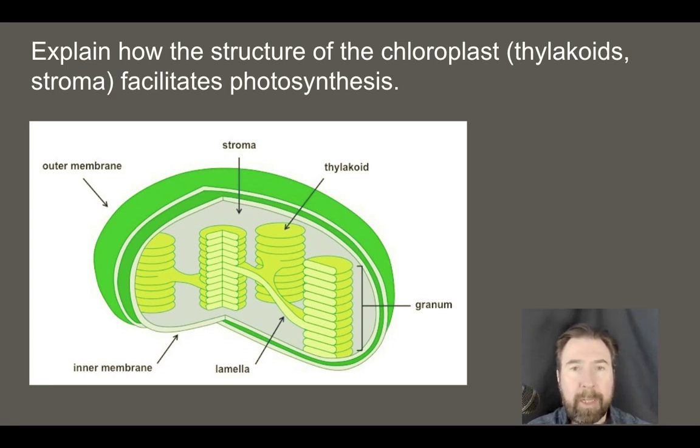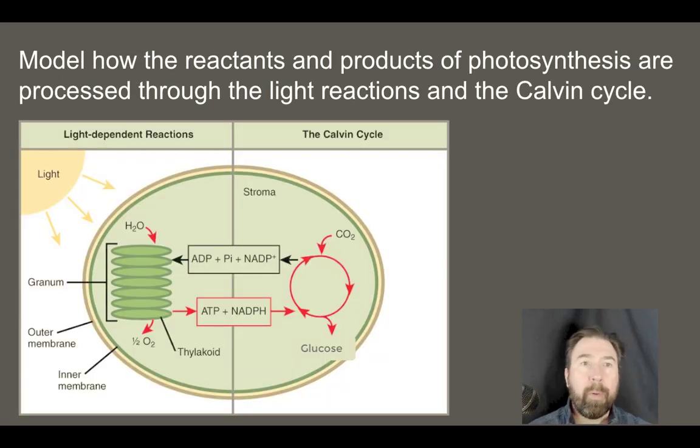These are the two regions where you're going to have the two types of reactions that take place for photosynthesis. Specifically within the thylakoids we're going to see those light dependent reactions, the ones that are going to take sunlight and initiate the reaction. Then the space outside of there we're going to see the Calvin cycle or light independent reaction. Let's get into those components. I want to model how reactants and products of photosynthesis are passed through light reactions and the Calvin cycle.